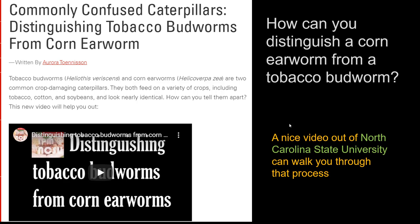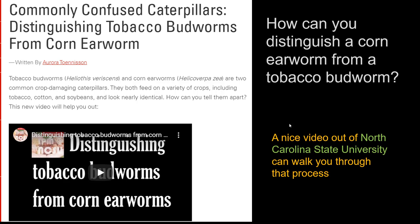One way to distinguish these larvae is a nice video available online from North Carolina State University. Distinguishing tobacco budworms from corn earworms requires close examination of the caterpillars, looking at features that require a little bit of magnification.